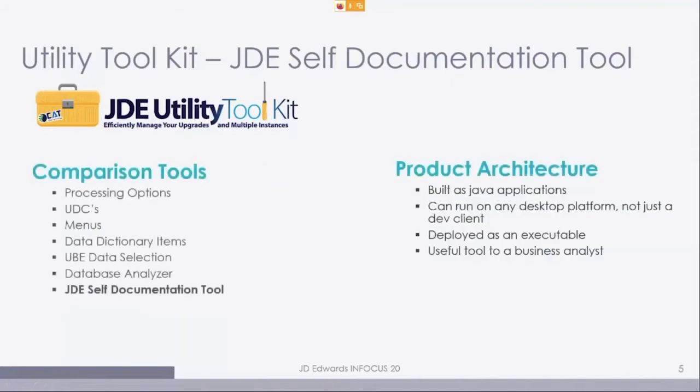What we're talking about today is the self-documentation tool. The product architecture is built as a Java application, so you can run it on any desktop platform. It doesn't have to be a JD Edwards developer client — just so long as it's connected to your network and can see the JD Edwards servers, it will work.